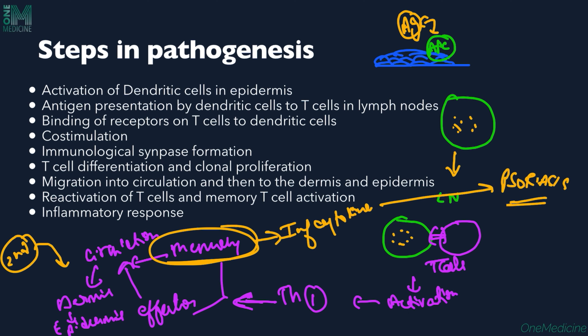To summarize the pathogenesis: activation of dendritic cells in the epidermis takes place first, then antigen presentation by dendritic cells to T-cells in the lymph node. Binding of receptors occurs between T-cells and dendritic cells, followed by co-stimulation and immunological synapse formation - an important step because certain drugs inhibit this. T-cells then differentiate, clonally proliferate, and migrate via epidermotropism to the dermis and epidermis. On second exposure, memory T-cells reactivate rapidly, producing the inflammatory response.